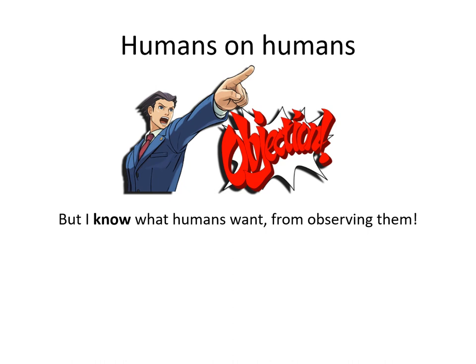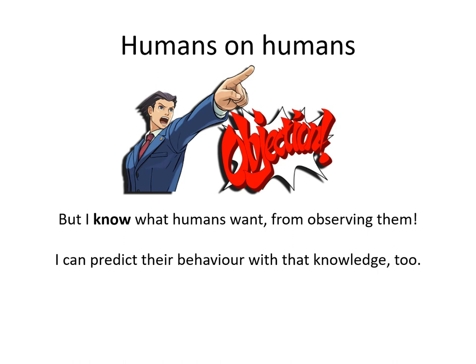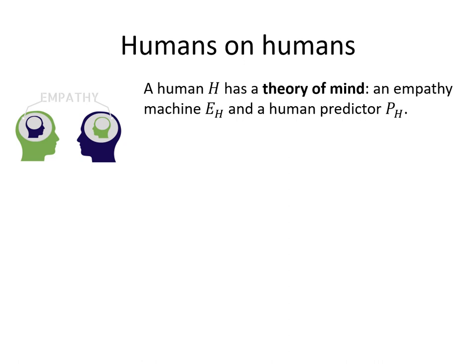There may be an objection springing to mind: we know what humans want from observing them, so what is supposedly impossible is, for us, easy. We can predict behavior with that knowledge — this isn't just internal certainty, it has demonstrable effects on the real world. For example, if we see someone getting red in the face, shouting and throwing stuff at us, we can conclude that they are angry and wish to harm us. What we've done is gone from behavior to preferences — something supposedly impossible. So what is going on here?